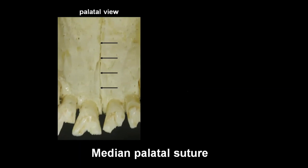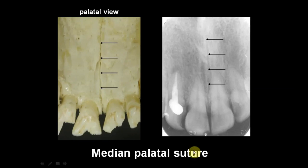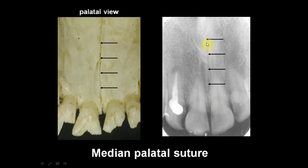The median palatal suture is a suture line extending from the alveolar crest posteriorly to the hard palate. In the radiograph, you may see this as a radiolucent line extending from the alveolar crest level up to the anterior nasal spine.